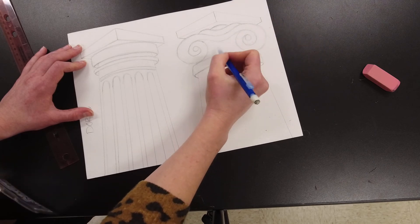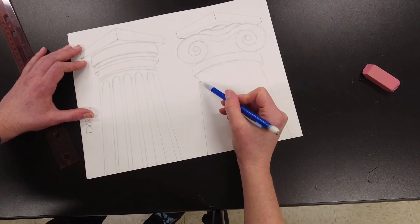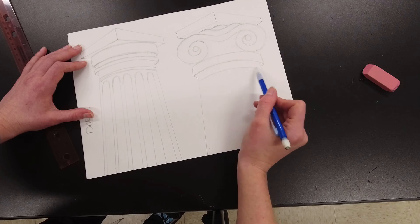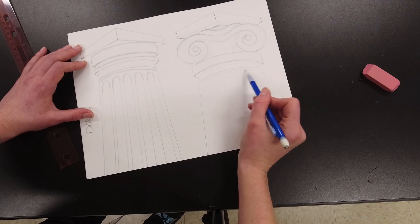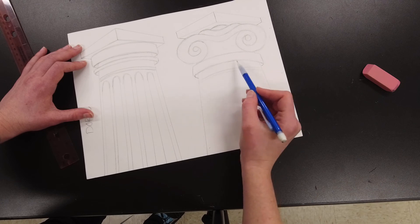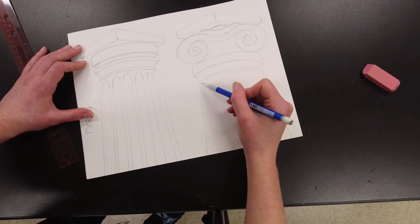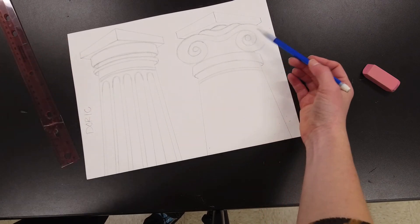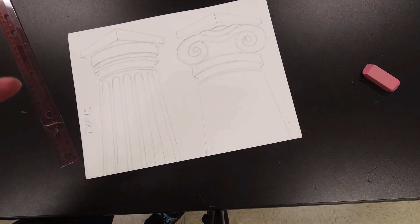And then if I wanted to add anything here, I could. If I wanted to go ahead and add another stripe here before I get to the flute portion, I could. But the main thing is that you want your ionic column, if that's the one you choose, to have the swirlies to be fancier than the doric, but not as fancy as a Corinthian example would be.